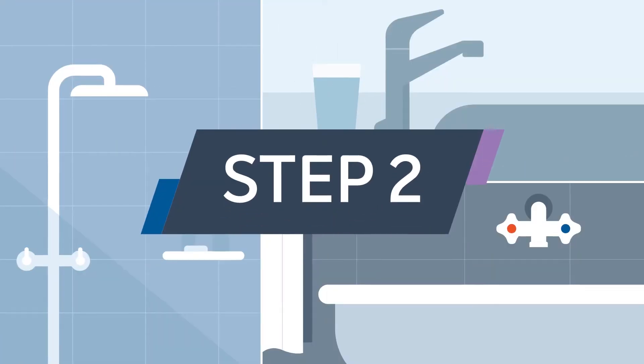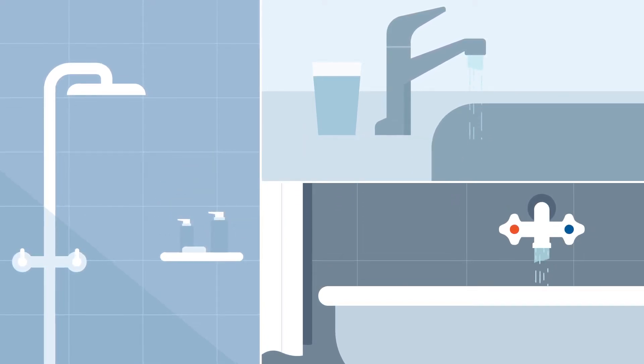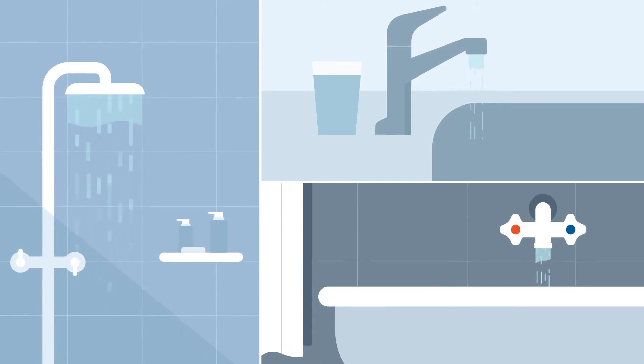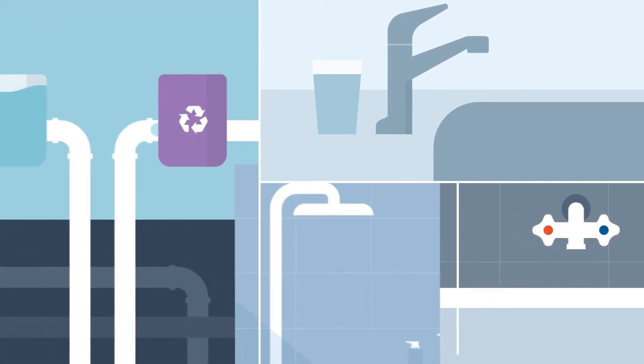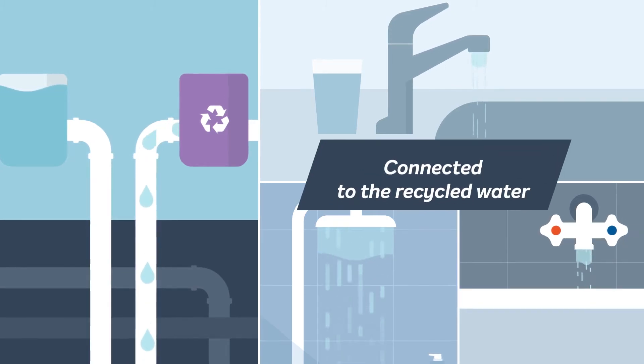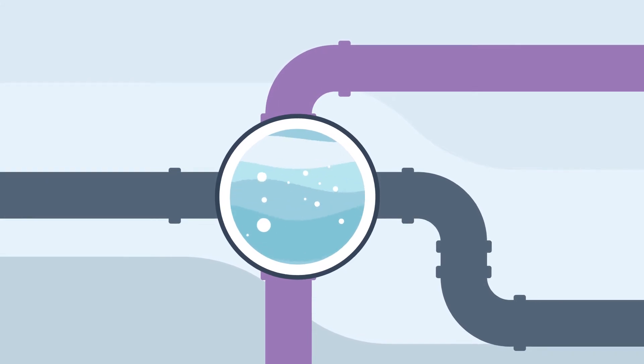Step 2. Slowly turn on all hot and cold laundry, sink, bath and shower taps one by one. All taps should run dry after a short period of time. If they continue to run, they could be connected to the recycled water system. This is called a cross connection.